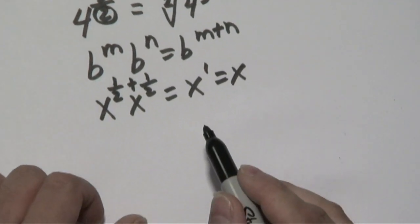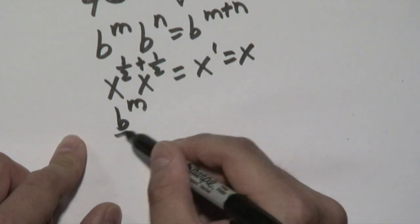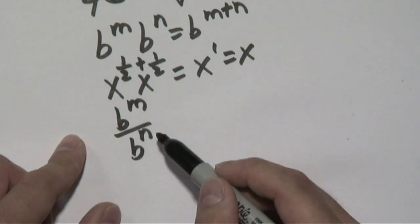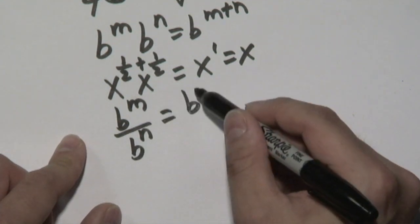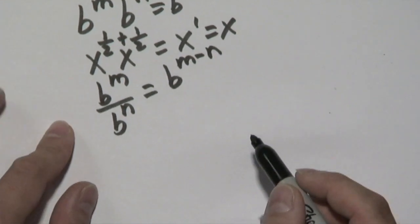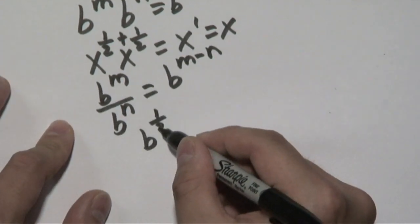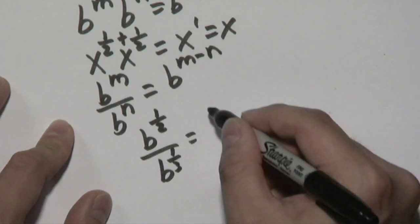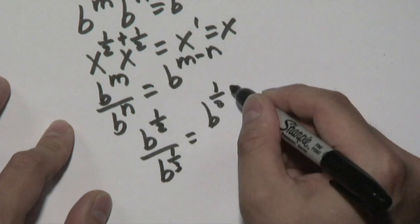Another property that you can use would be if you have b to the m over b to the n. Again, if the bases match but the exponents are different, you can subtract those. So if you have something like b to the 1 half over b to the 1 third, you can subtract those, 1 half minus 1 third.